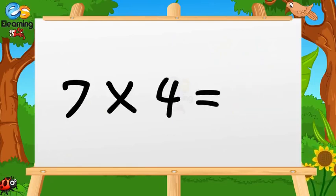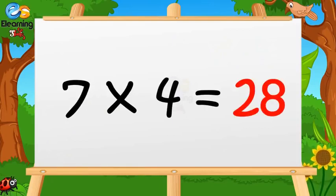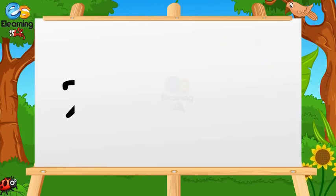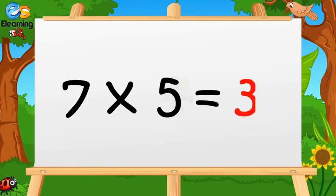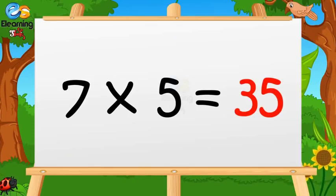Seven fours are twenty-eight. Seven fives are thirty-five.